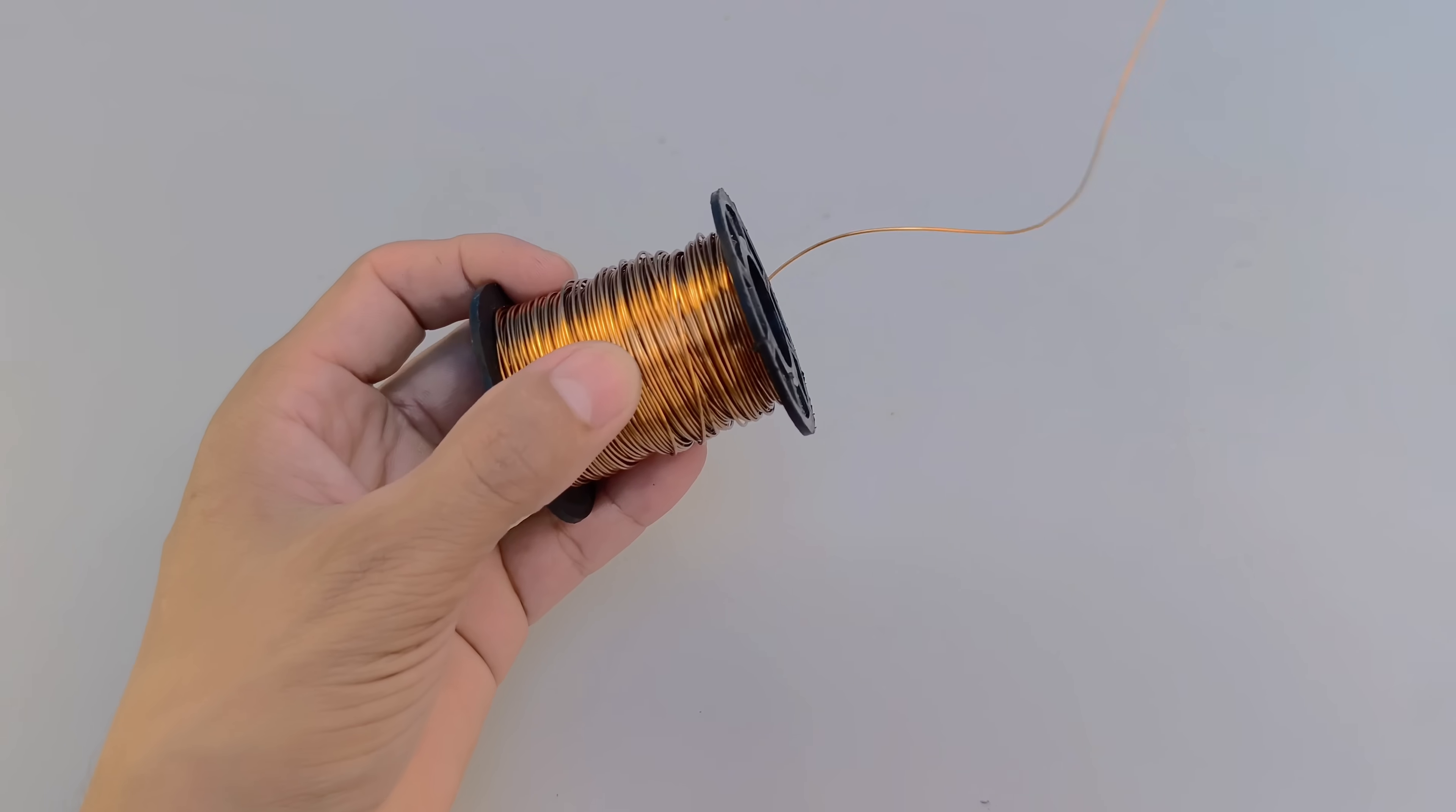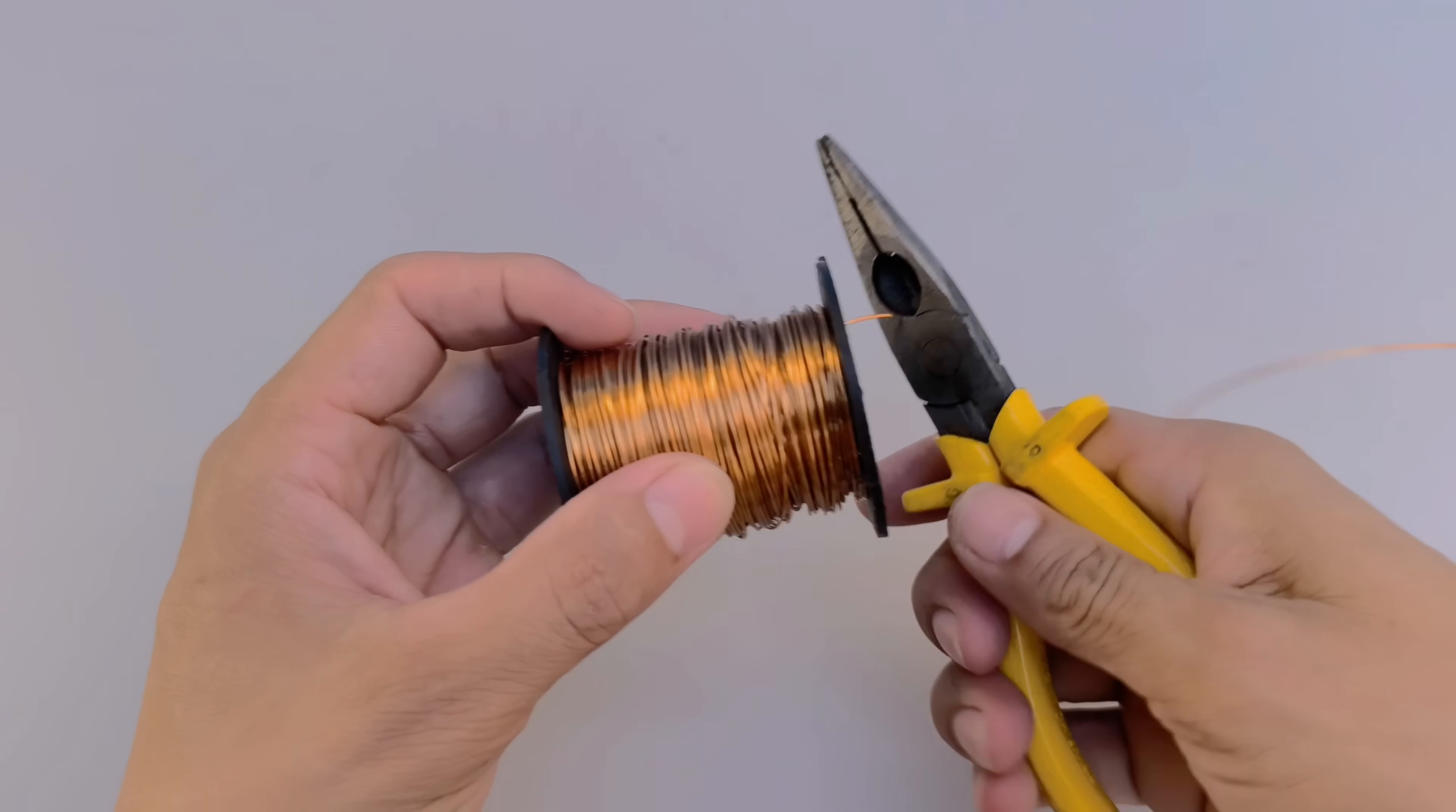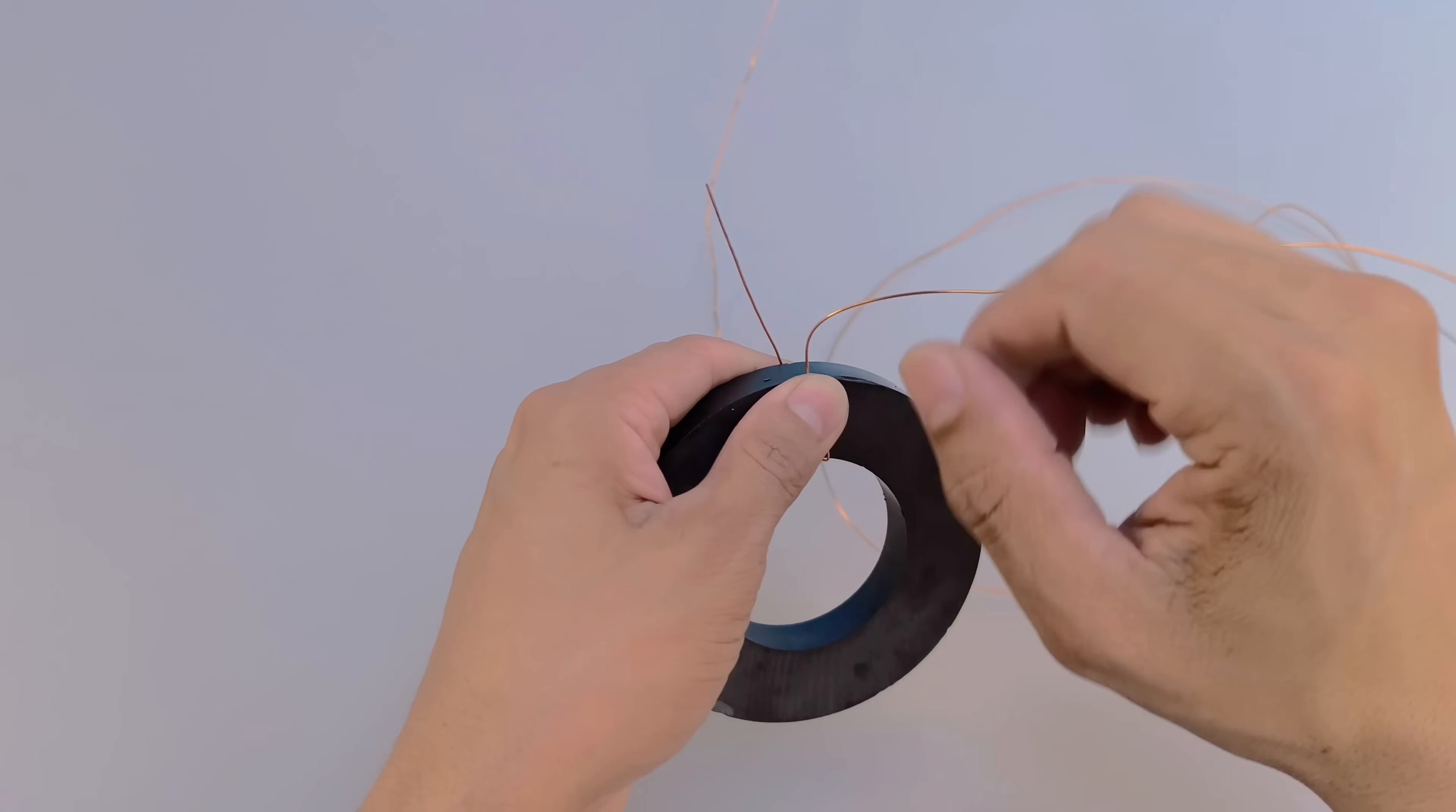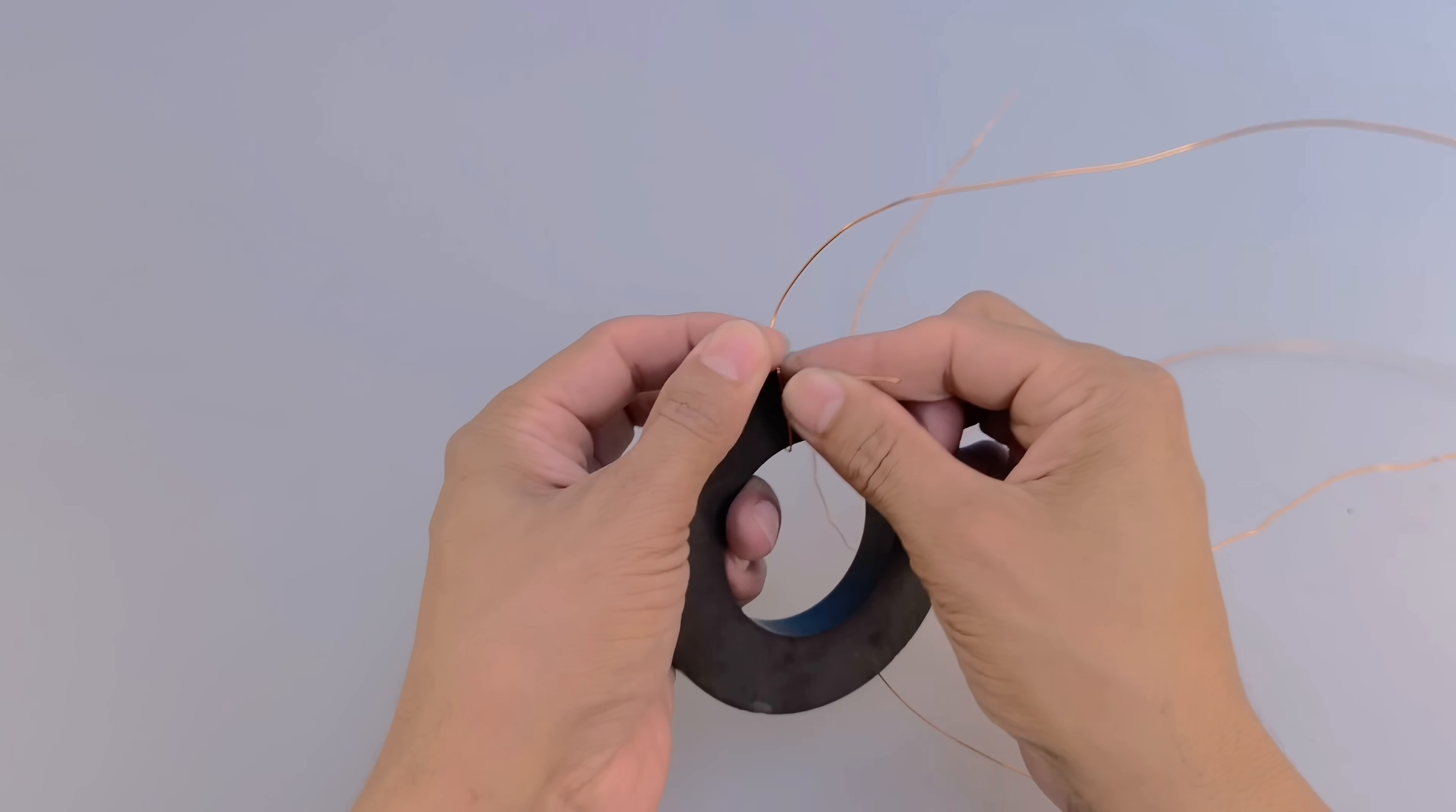Set aside approximately one and a half meters of this copper wire to use in the project. The function of the enameled copper wire is to be wound around the magnet, forming several turns. This winding is essential for the project to work.